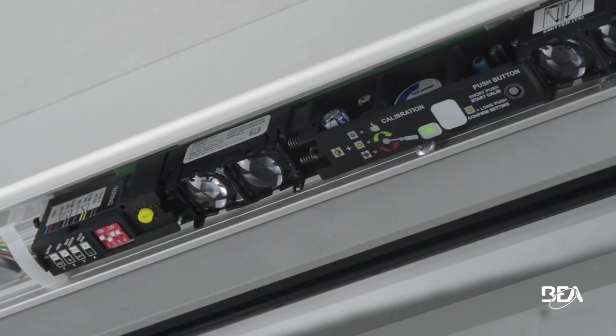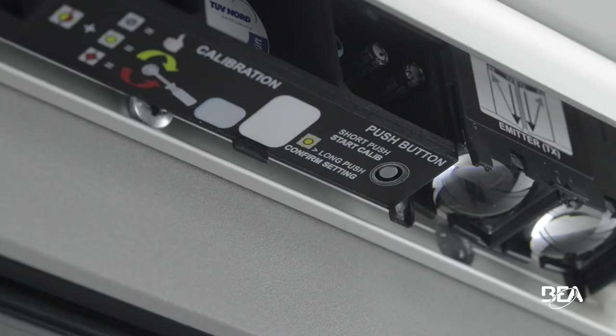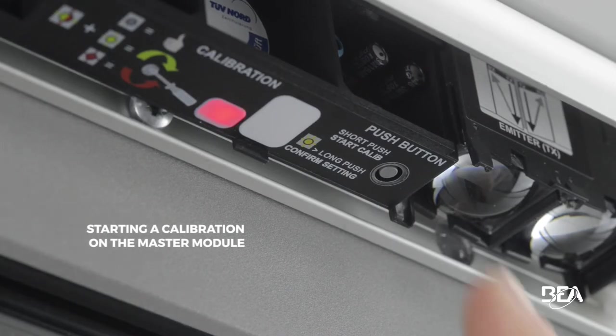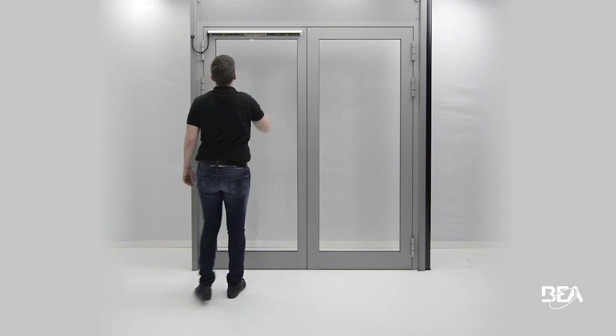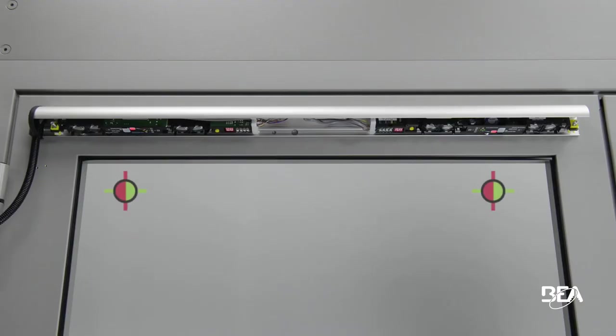If the sensor flashes red, slowly turn the screw the other way round. A short push on the button of the master will launch a calibration on all the modules. By doing this, all modules will start flashing.